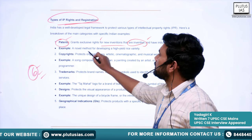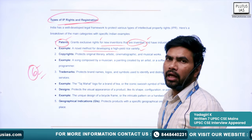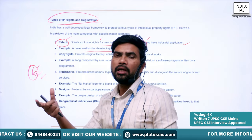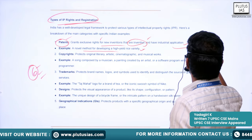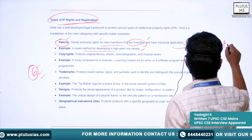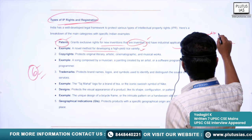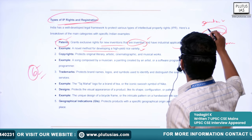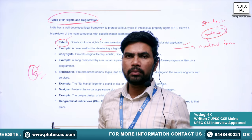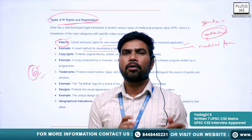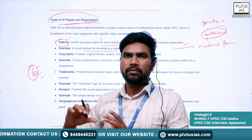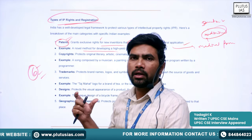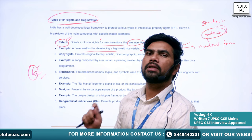For a novel method of developing a high-yielding rice variety, or preparing a medicine to treat a particular disease, a patent will be granted. There are two types of patents: process patent and product patent — we will see the major difference between these later in the class. Patent is one of the most important types of intellectual property rights.